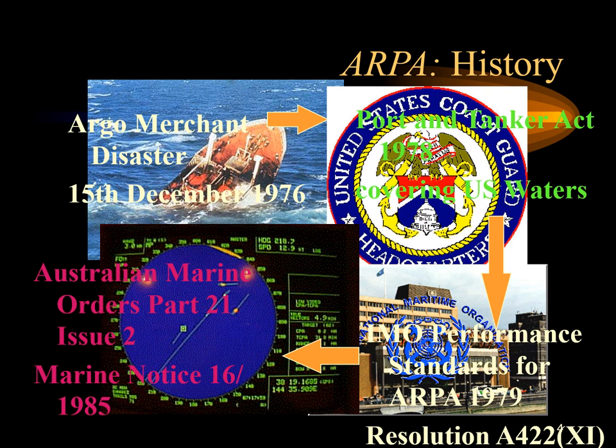Australia adopted the IMO resolution into marine orders on 1st September 1984, and ARPA fitted to an Australian ship had to meet IMO performance standards as enforced by AMSA. The marine notice provided the fitting schedule for ARPA onto Australian ships and stated that all operators must be properly trained in its use and limitations. It is required on all ships over 10,000 tonnage constructed on or after 1st September 1984, with possible exemptions for vessels in coasting trade.